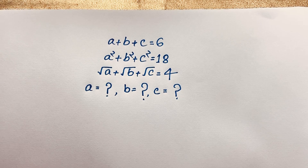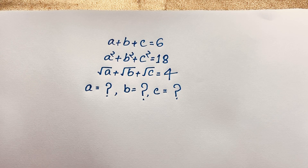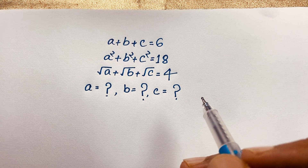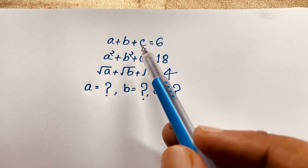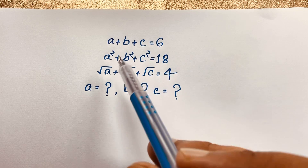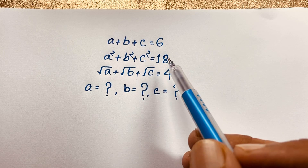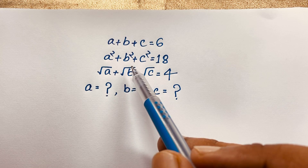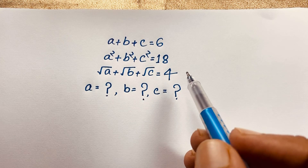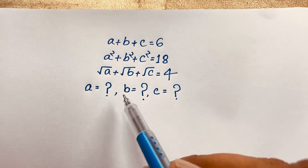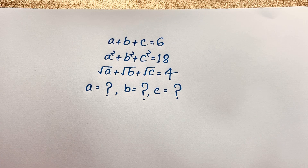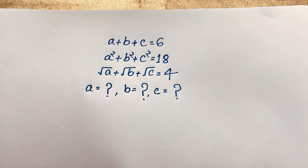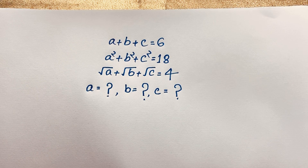Hello everyone, welcome to Rasha's classroom. Today we have solved an interesting math Olympiad question: a plus b plus c is equal to 6, a squared plus b squared plus c squared is equal to 18, square root a plus square root b plus square root c is equal to 4, and abc is equal to 1. How to solve this interesting math Olympiad question.